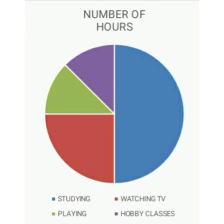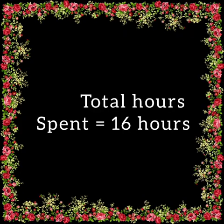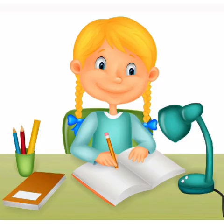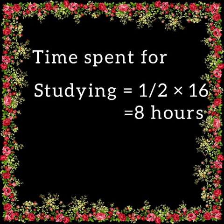Let us find the number of hours spent by Monica on each activity. The total number of hours spent by Monica on these activities in that week was 16 hours. From this circle graph, we can find the time spent on studying is half of the total hours, that is half of 16, which is 8 hours.